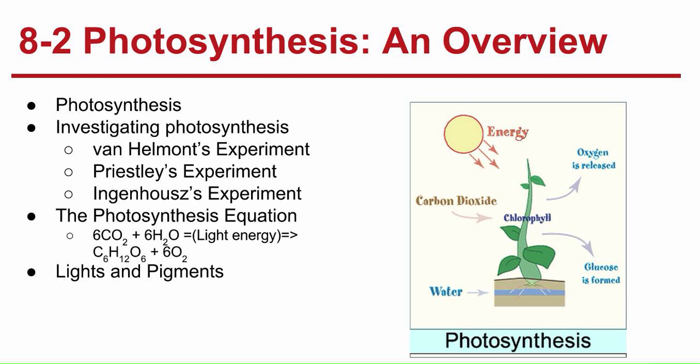Investigating photosynthesis. There are three main experiments that led to our knowledge about photosynthesis today. Van Helmont's experiment: he planted a sapling in dirt, weighed the dirt and the sapling before. By watering it for five years, he then measured the mass of the dirt and tree at the end. He saw it had gained mass and determined the mass gain was from water. What he didn't take into account was the carbon dioxide the plant takes in, which does, in fact, add weight to it.